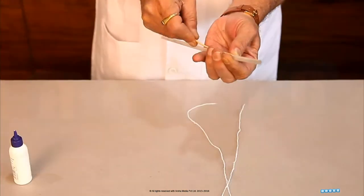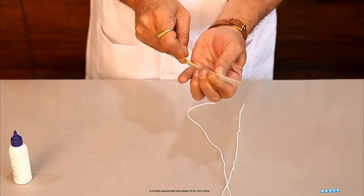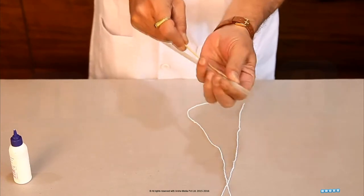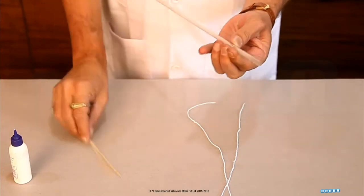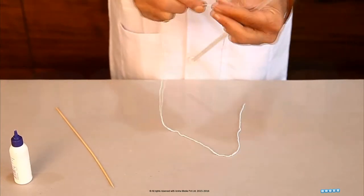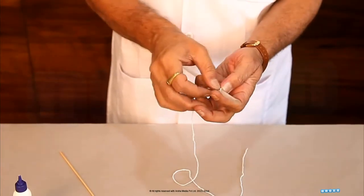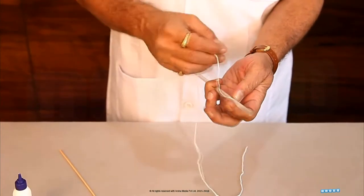Make a hole to the straw at about 3 cm. Then, insert a thread about 17 cm in length into the hole.